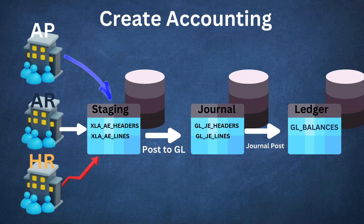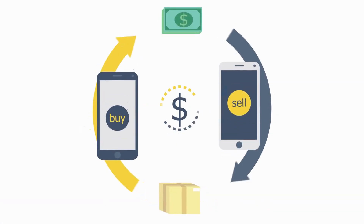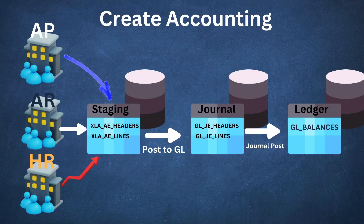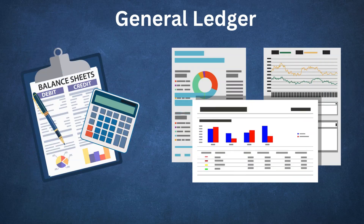And there you have it folks — we just demystified the world of general ledger using one simple transaction as our guide. Now imagine thousands of these transactions happening every single day, with the GL_balances table constantly getting updated in the background. It's like a financial heartbeat keeping track of your business's health in real time. While we focused on expenses today, remember this same logic applies across the board — assets, liabilities, and equity. All that data flows into the reports you need to make smart decisions: your income statement, balance sheet, cash flow — you name it.